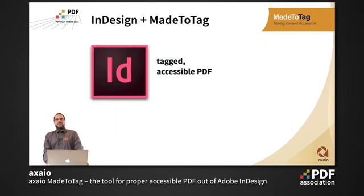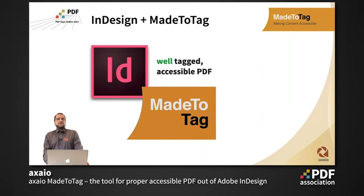Me2Tag and InDesign are a good pair. InDesign itself can create tagged accessible PDF, but with Me2Tag you can create well-tagged accessible PDF UA in a much more efficient way. Just give it a try — you can download the demo at axia.com/Me2Tag. The 30-day trial is fully functional. If you have any questions, contact us at info@axia.com or support@axia.com. We're ready to help.